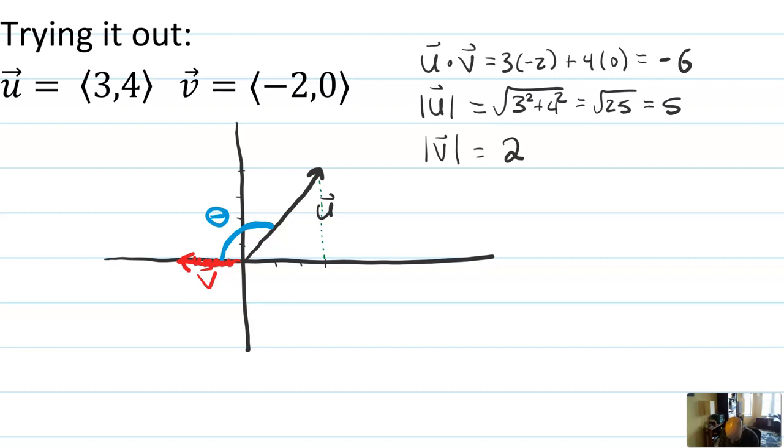All right. So the formula for this vector then is the angle cosine theta is equal to u dot v, negative 6, divided by magnitude of u, 5, times magnitude of v, 2. So negative 6 over 10, or negative 3 over 5.